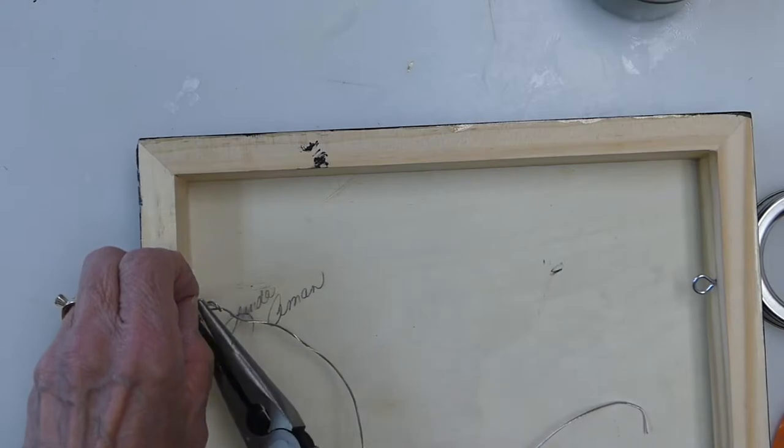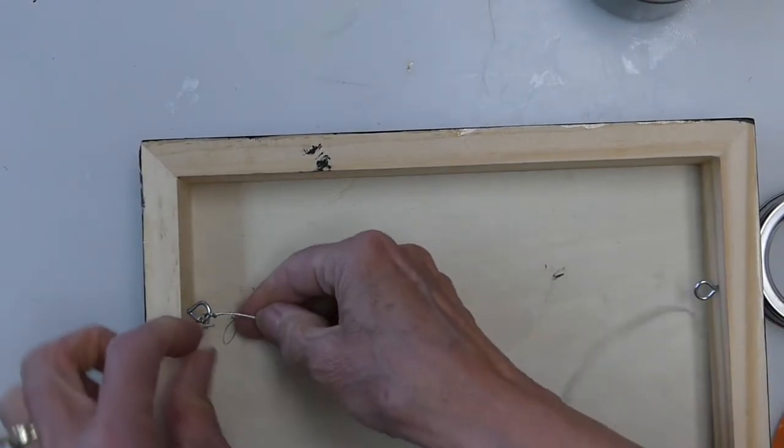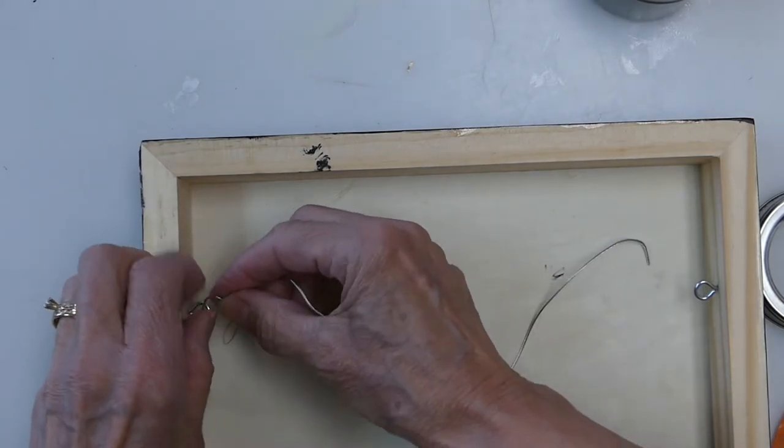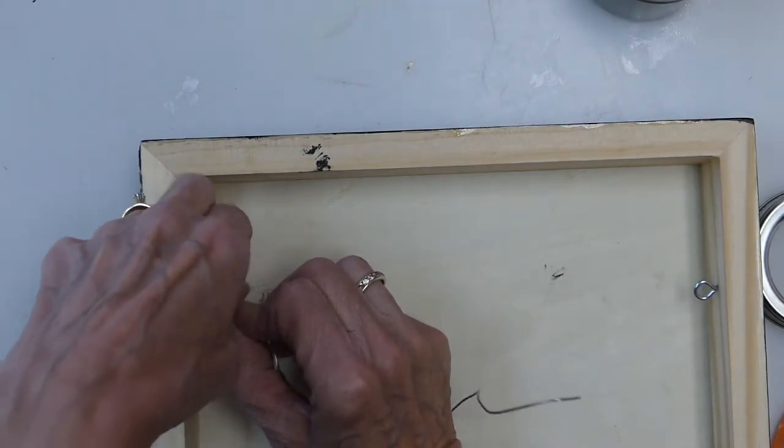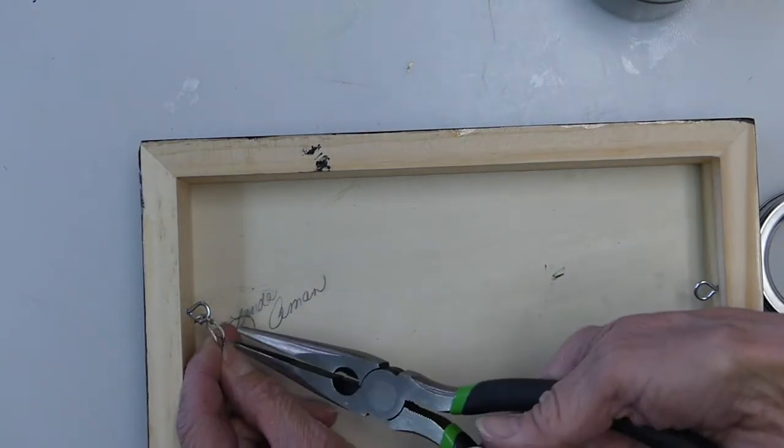I take pliers so I can pull it really tight. I do that twice. You could do it just once. It's really going to hold with those two loops that I did on the eye of the screw.